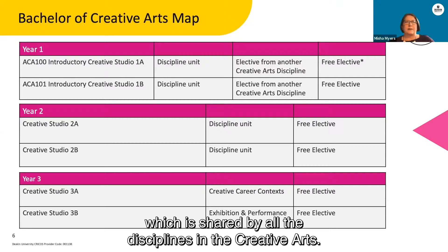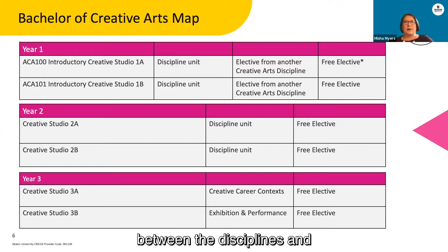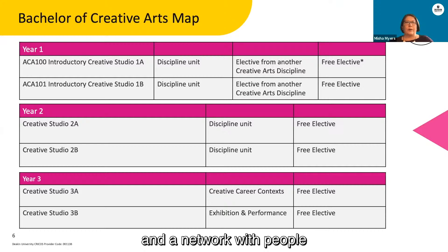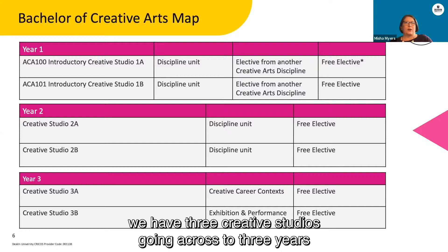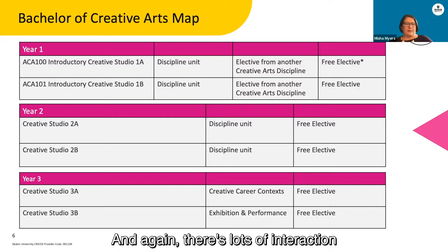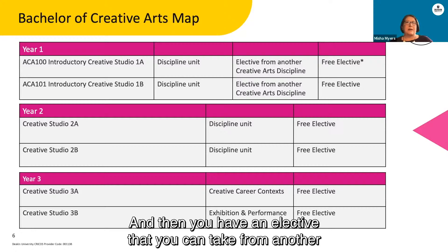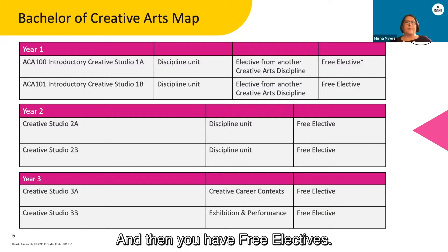The course has an overall structure shared by all the disciplines in the creative arts, and we have moments where we have interaction between the disciplines, and also interaction with disciplines outside of creative arts. So you have the chance to really build a community and a network with people across the creative arts disciplines. We start in year one looking at creatives — we have three creative studios going across the three years. There's lots of interaction looking at core concepts, then discipline units where you start to drill down into discipline-specific skills, and an elective from another creative arts discipline to give you broader skills, plus six free electives across the course.